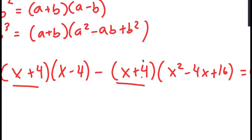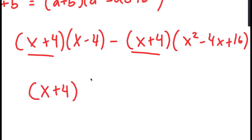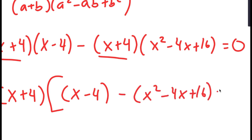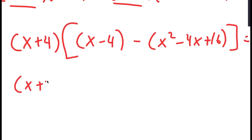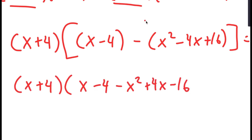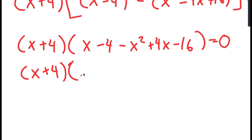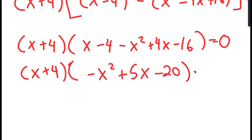Now, because both of these terms have x plus 4 in them, I can factor out x plus 4. So I get x plus 4 times x minus 4 minus x squared minus 4x plus 16, which equals 0. Distributing the negative sign gives x plus 4 times negative x squared plus 5x minus 20 is equal to 0.